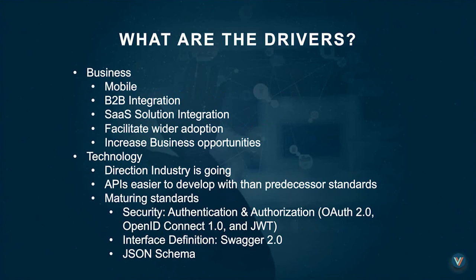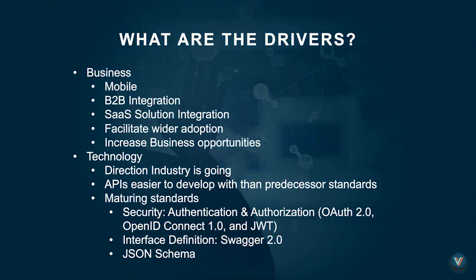What are the drivers? These fall into two high-level categories: business and technology. On the business side, we had mobile, B2B integration, and SaaS solution integration. We want to facilitate wider adoption and increase business opportunities. It was the business that was driving adoption of software as a service rather than having IT do something in their traditional data center. After deploying a couple dozen SaaS solutions, they found they needed to start sharing data — so having an API gateway intermediary sitting between those SaaS solutions was very important.